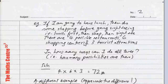Let's look at an example. If I am going to have lunch, then do some shopping before going sightseeing, that is, lunch first, then shop, then sightsee. There are four possible restaurants that I can visit, six shopping centers I can go to, and three tourist attractions I can visit. In how many ways can I do all three? So, basically, the question, you can think about it as, how many possibilities are there?